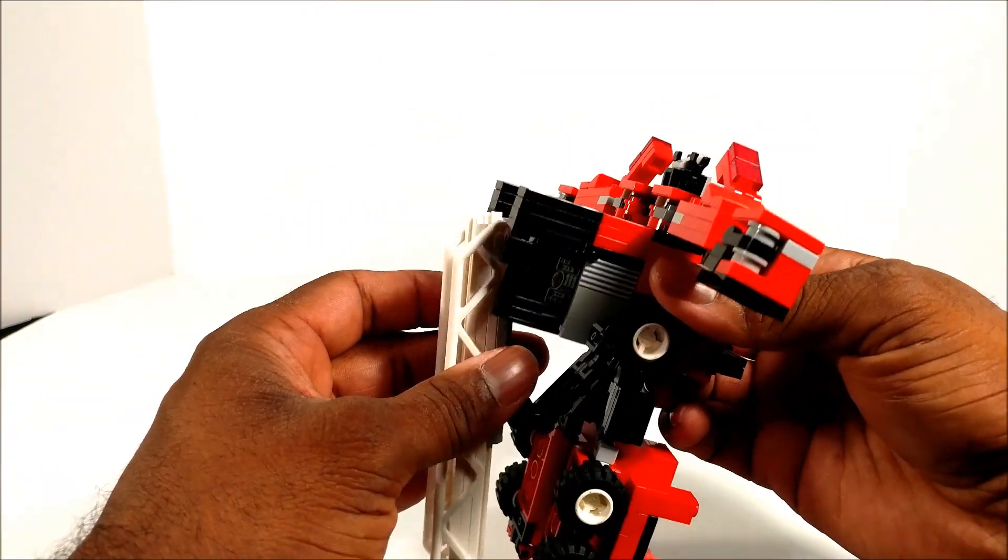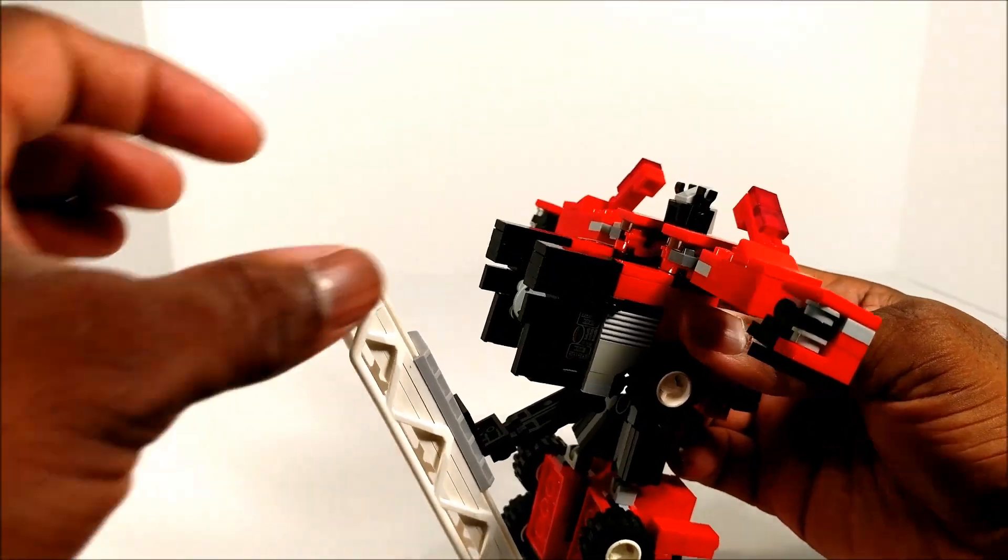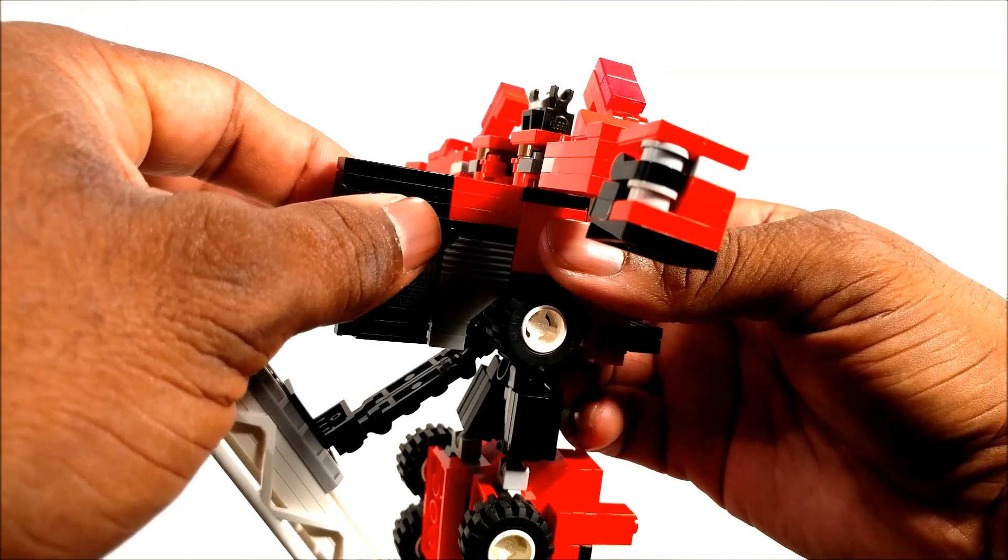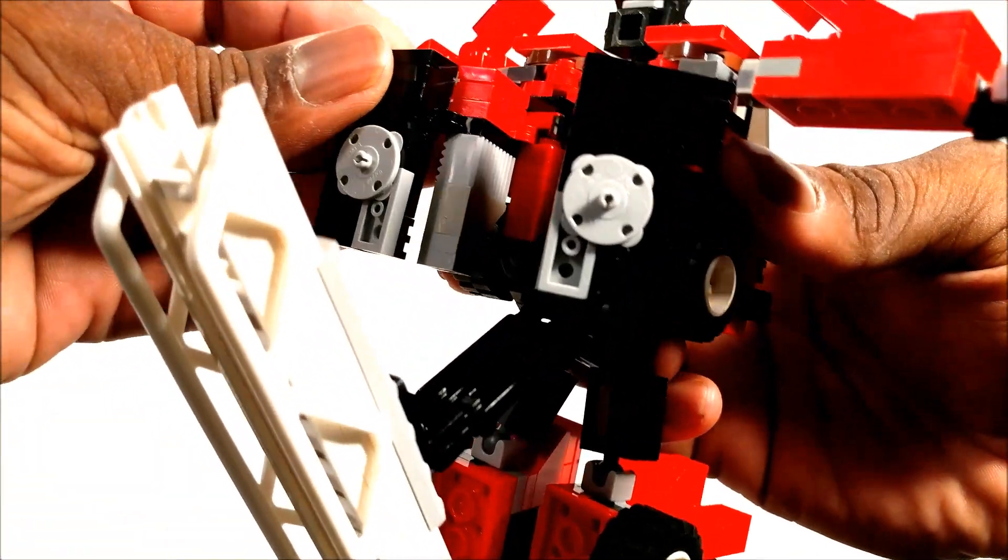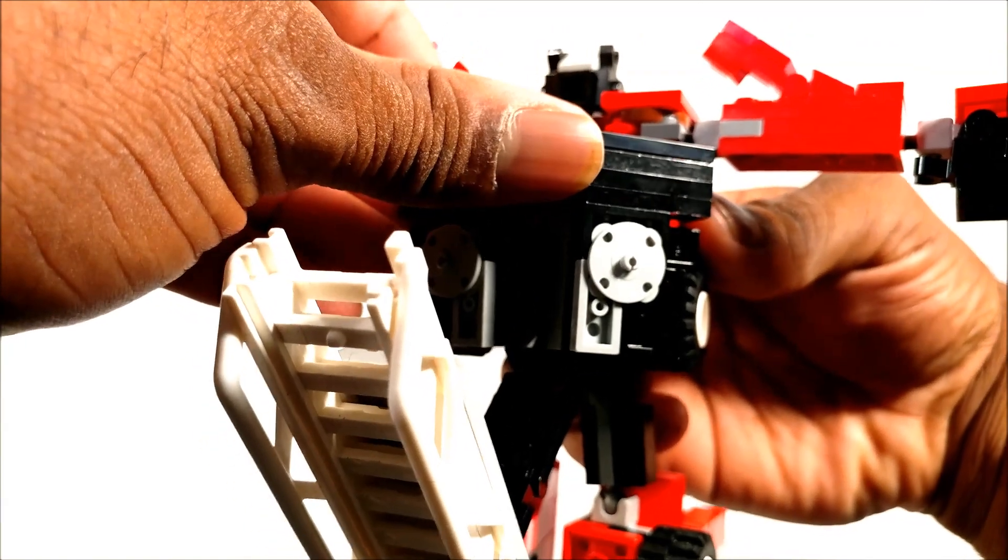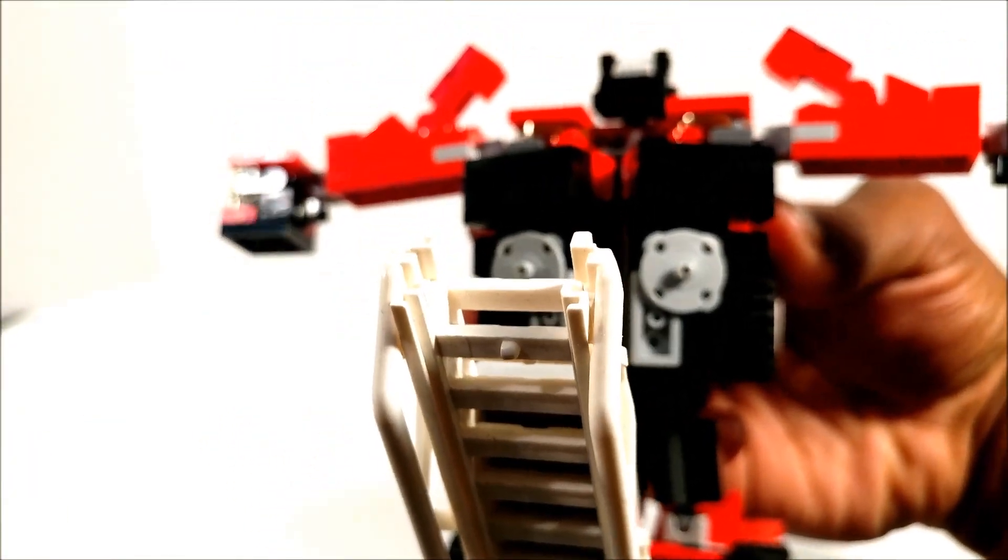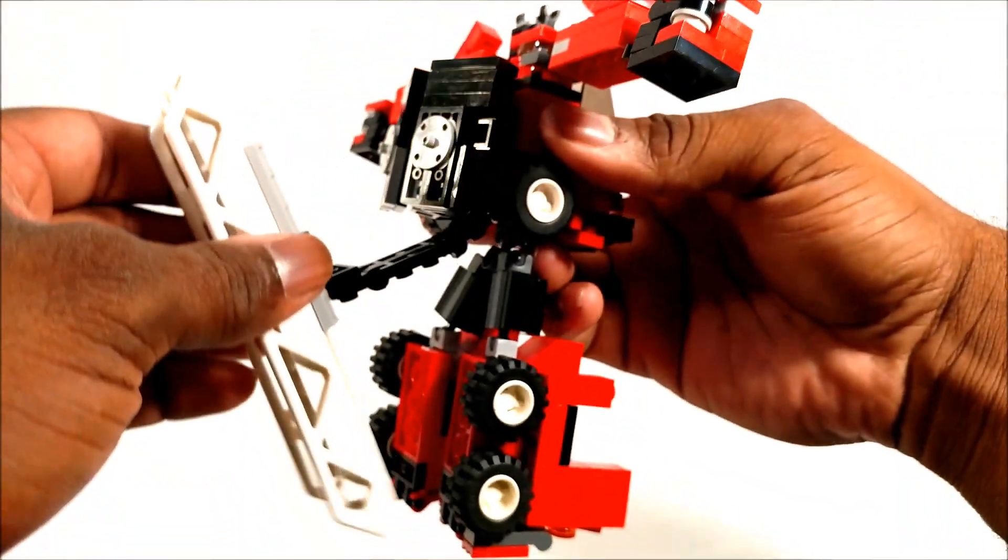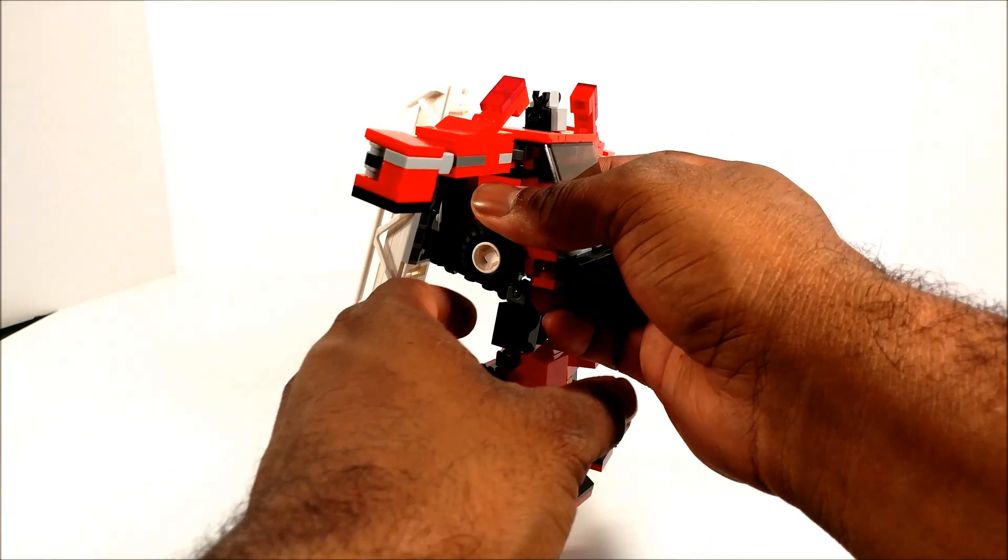Next thing we're going to do is get these flaps. Make sure you guys can see that. Fold that in like that, fold this in, and it's only going to meet about halfway because the hinges kind of bump into each other back there. That allows everything to sit flush like that, or as flush as possible.